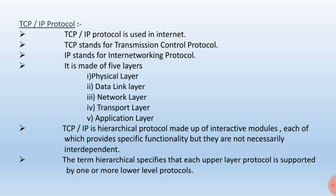All these protocols exist in five layers: physical layer, data link layer, network layer, transport layer, and application layer. TCP IP is a hierarchical protocol made of interactive modules, each of which provides specific functionality but they are not necessarily independent. The term hierarchical specifies that each upper layer protocol is supported by one or more lower layer protocols.